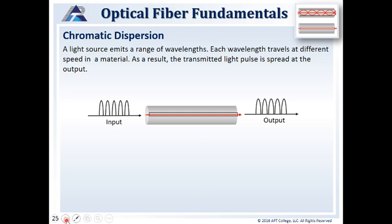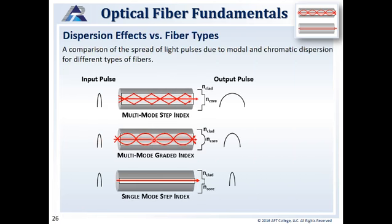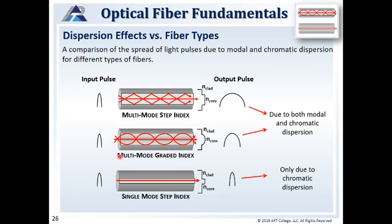We also have chromatic dispersion. A light source emits a range of wavelengths, and each wavelength travels at a different speed in the material. As a result, the transmitted light pulse is spread at the output — we lose the defined separation between pulses. Single-mode fibers are only affected by chromatic dispersion, which is much smaller compared to modal dispersion — that's why single-mode fibers are used for long distance transmissions. For multimode fibers, we have both chromatic and modal dispersion, but for single-mode fibers we only see chromatic dispersion.